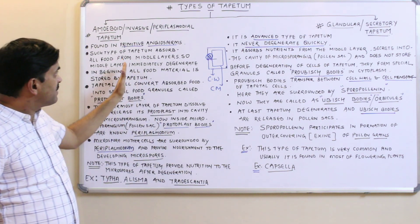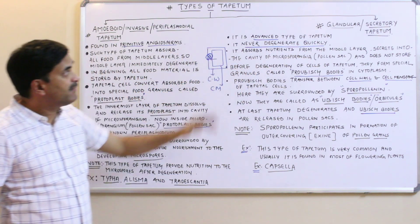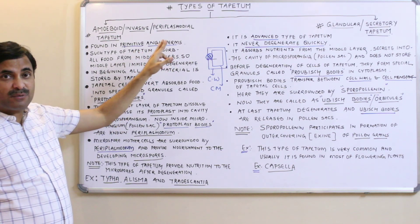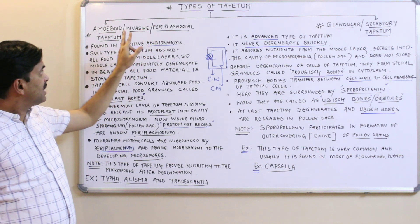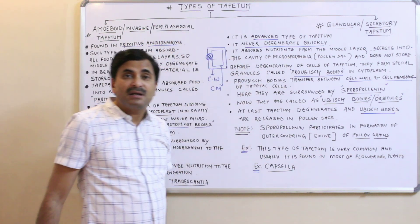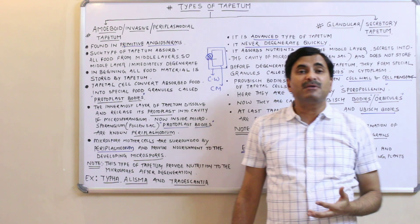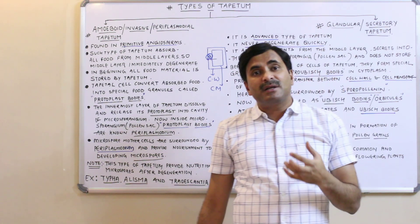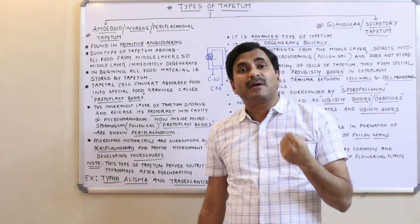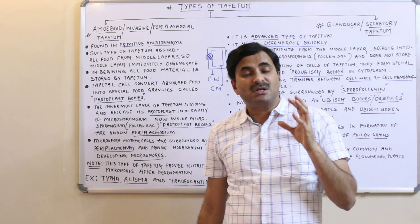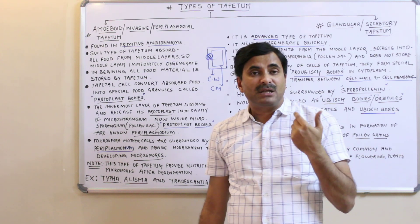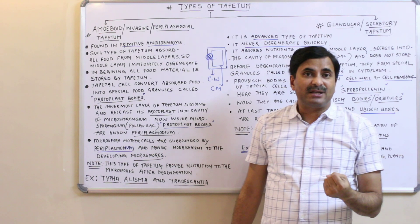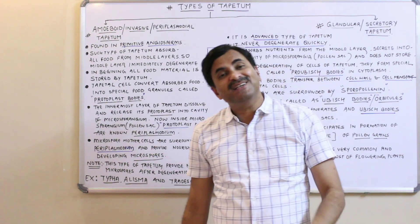So today we have discussed two types of tapetum: amoeboid tapetum and glandular tapetum. In the next upcoming video we will be discussing the development of the anther — we have discussed the structure of the anther, but in the next video we will deal with its development. Keep watching, thanks a lot.